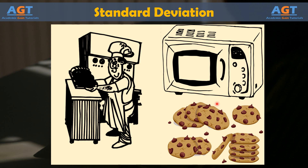Six Sigma process improvement teams usually take a two-step approach to improvements. First, they have to determine if the process is functional. In the cookie example, does the recipe work at all — is there even a recipe? Once the team determines there is a workable recipe, they make improvements to remove the variation that causes outputs to deviate from the result intended by the recipe.